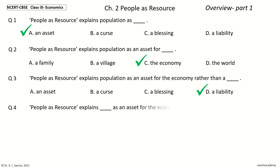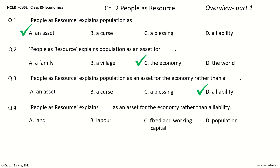Question 4: People as Resource explains ___ as an Asset for the Economy rather than a Liability. The options are: Land, Labour, Fixed and Working Capital, Population. Your time to choose. And the answer is: Population. So, People as Resource explains Population as an Asset for the Economy rather than a Liability.